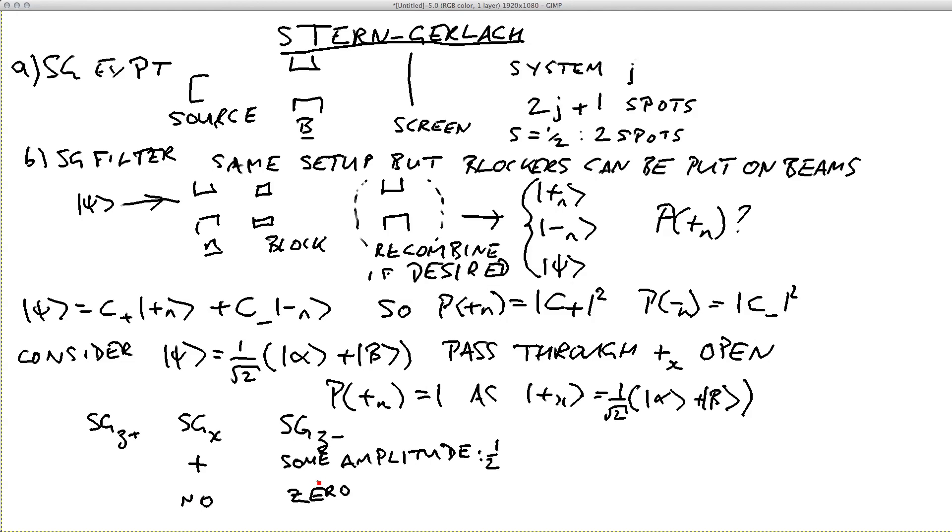That's just a few observations on Stern-Gerlach filters and why we get different results when we pass through different filters at different times. Have a think about it. Play some games, see if you can think of sets of filters that will give similar kinds of results, unexpected ones and zeros.